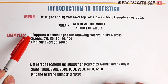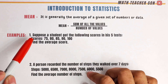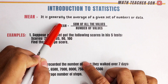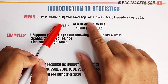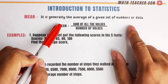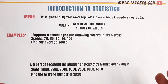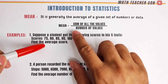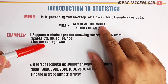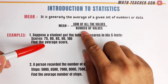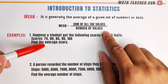First, let us define what is mean. Mean is generally the average of a given set of numbers or data. And to get the value of the mean, we have the formula: sum of all the values over the number of values.